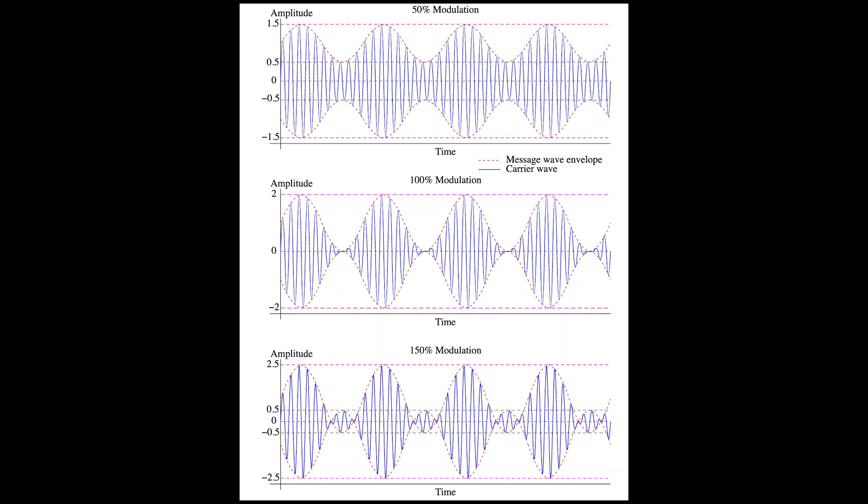Ideally you want to modulate up to 100%. At 100% modulation, the power will be four times the carrier power. This means the carrier is only one quarter of the total. In a typical 100-watt radio, you have 100 watts peak envelope power, so your AM signal can have 100 watts peak envelope power, but the carrier wave is going to be one quarter of that — meaning 25 watts carrier.